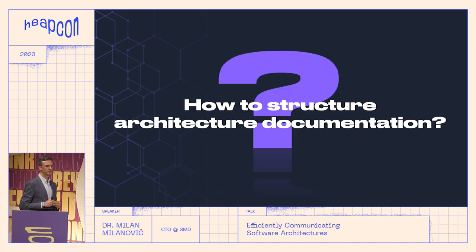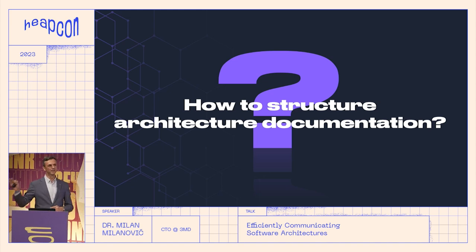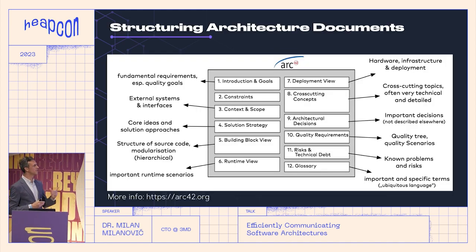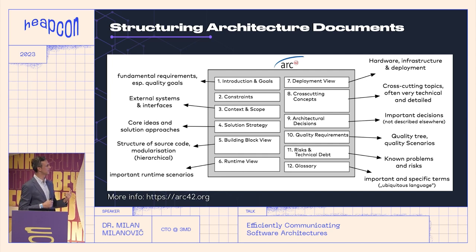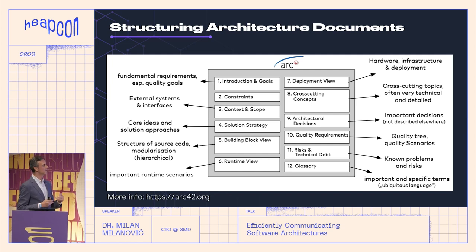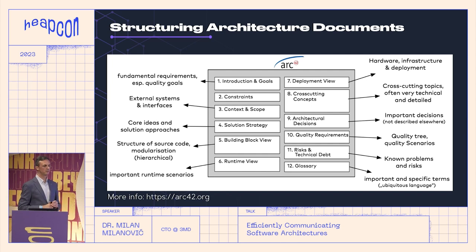But how can we structure all of this documentation? Some teams have some of these documents but they are just scattered all around — something is in source code, something is in Confluence, something is even on local machines. One way to structure this is the Arc42 template, a lightweight template for documenting and communicating software architecture. It supports different tools and technologies and is completely process independent. It consists of fields covering requirements, external systems, your core idea and solution, different views on your system from source code to deployment view, cross-cutting concepts, architectural decision records, quality requirements, technical depth, and glossary.